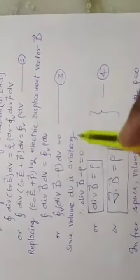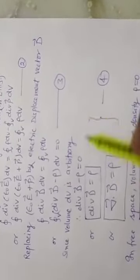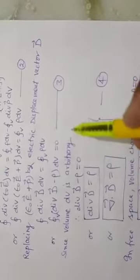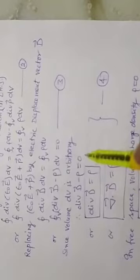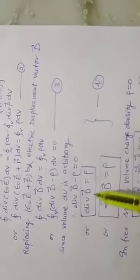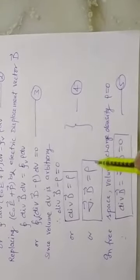Since the volume dv is arbitrary, it cannot be zero. Therefore, divergence of D minus rho equals zero, or divergence of D equals rho. Written symbolically, divergence of D equals rho. This is equation number 1 in differential form.